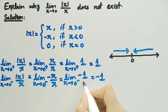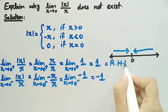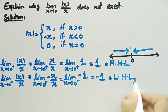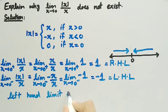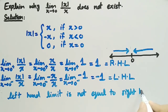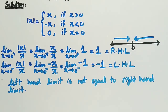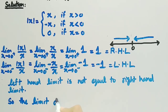We have calculated that the right-hand limit is equal to 1 and the left-hand limit is equal to minus 1. We can clearly see that the left-hand limit is not equal to the right-hand limit. Since the left-hand limit is not equal to the right-hand limit, we can say that the limit of the given function does not exist.